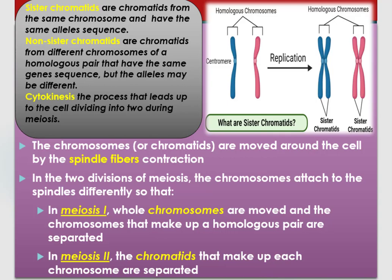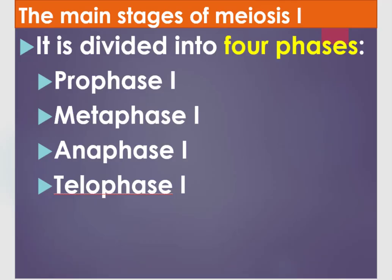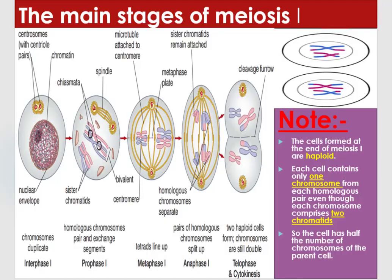In the two divisions of meiosis, the chromosomes attach to the spindles differently. In meiosis 1, whole chromosomes are moved and the chromosomes that make up a homologous pair are separated. In meiosis 2, the chromatids that make up each chromosome are separated. The main stages of meiosis 1 are prophase 1, metaphase 1, anaphase 1, and telophase 1.